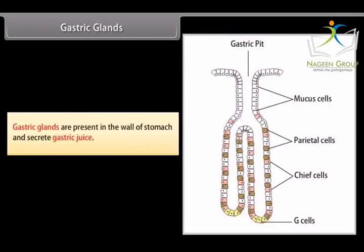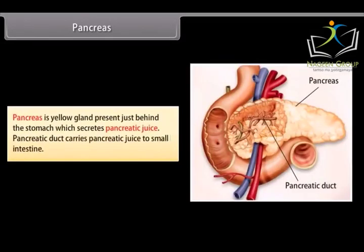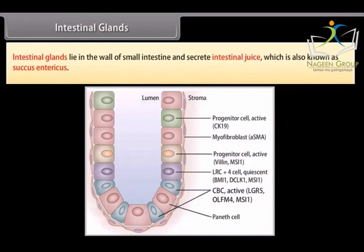Gastric glands are present in the wall of the stomach and secrete gastric juices. The liver is the largest gland of the body — lobulated and reddish-brown colored — present on the right side of the upper abdomen, and it secretes bile juice. The pancreas is a yellow gland just behind the stomach that secretes pancreatic juice; the pancreatic duct carries this juice to the small intestine. Intestinal glands lie in the wall of the small intestine and secrete intestinal juice, also known as succus entericus.